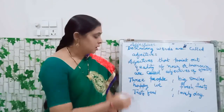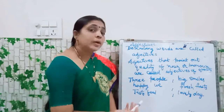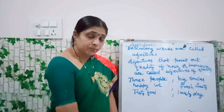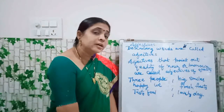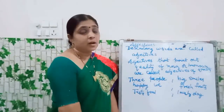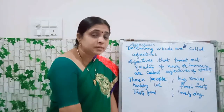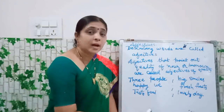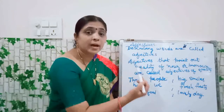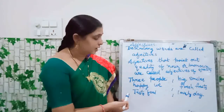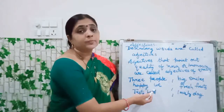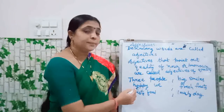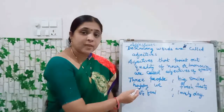For example, 'three people.' What is the noun here? People. People is noun. People means how many people are there? Three people are there. It describes by asking the question: What is the kind of the noun? Suppose 'happy we' — how are we? We are happy. So in 'happy we', happy is the adjective.